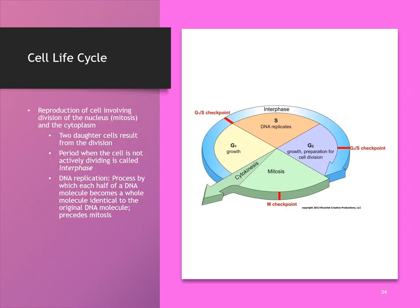We're coming into the home stretch — we have one more topic: cell reproduction. When we talk about the cell life cycle, we're talking about the different phases of the cell cycle. Reproduction of the cell involves division of the nucleus and the cytoplasm, which we call mitosis. The four stages of mitosis are prophase, metaphase, anaphase, and telophase. Interphase is when the cell is not replicating — it's involved in everyday activities like synthesizing proteins, chemicals, and enzymes, but it is not in the cycle of reproducing itself.